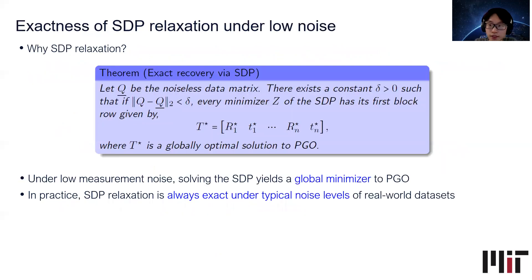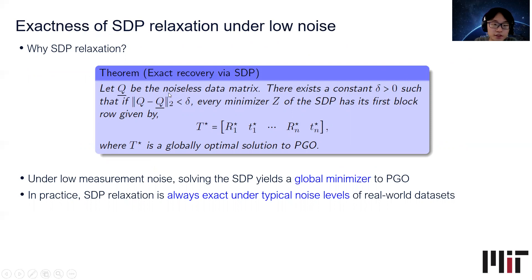Why do we want to solve this SDP relaxation? The answer is given by the following theorem: under low measurement noise, solving this SDP relaxation is guaranteed to produce a global minimizer to the non-convex PGO problem. Specifically, we prove there exists a constant delta such that if the distance between the input data matrix Q and the noiseless data matrix Q-bar is less than delta, then we can directly recover a globally optimal solution to PGO from a minimizer of the SDP relaxation. In practice, we also observe that this SDP relaxation is always exact under typical noise levels of real-world datasets.